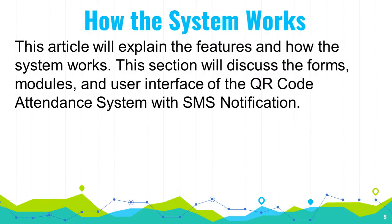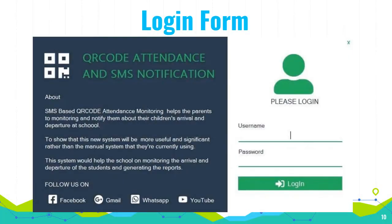How the system works. This section will discuss the forms, modules, and user interface of the QR code attendance system with SMS notification. Login form: This form will be used by the intended users in logging into the system. The users will set their username and password to access the features and records of the system.